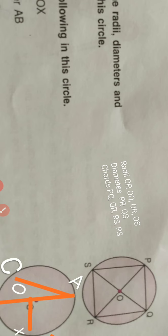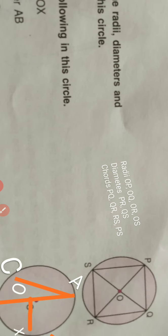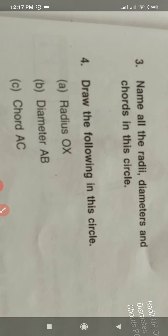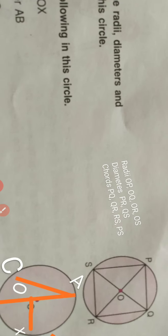And now we have to find chord. Chord is PQ, QR, RS, PS. PR and QS can also be written here. Because diameter is also a chord. Diameter is the longest chord.